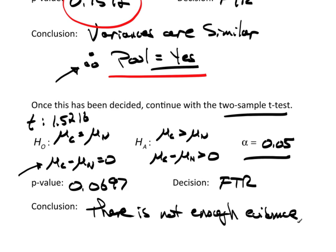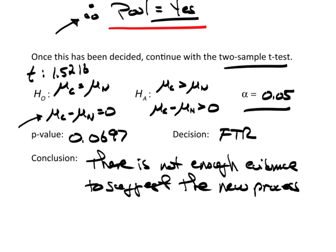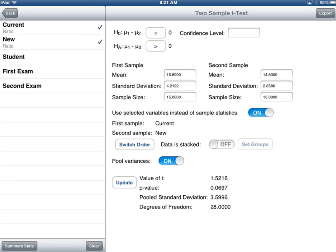And the conclusion is there is not enough evidence to suggest the new process has a smaller mean.